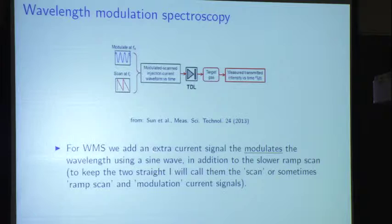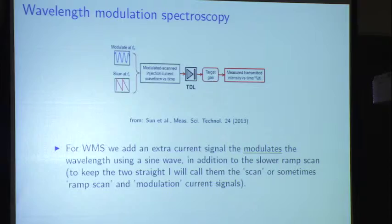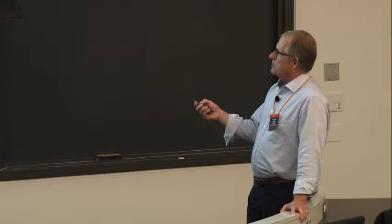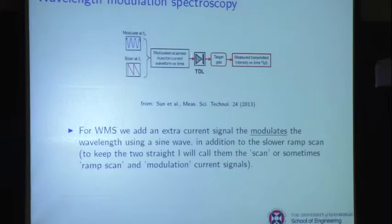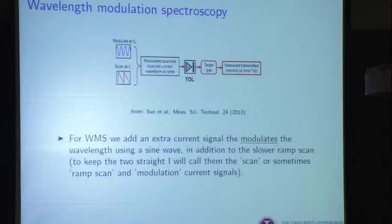For wavelength modulation spectroscopy, we add a sinusoidal current signal. We're doing two things at once to the wavelength: we slowly scan across the absorption profile, and we also modulate at high frequency but with much smaller amplitude. I'll call the slow one the scan — it goes all the way across the line — and the modulation is the small, higher-speed one. The scanning frequency FS is on the order of tens of Hertz; the modulation frequency FM should be in the range of 10 kHz into the megahertz to avoid 1/f laser noise.